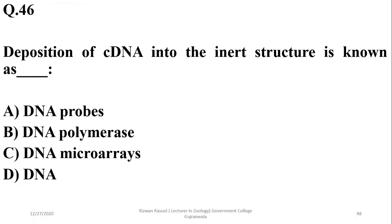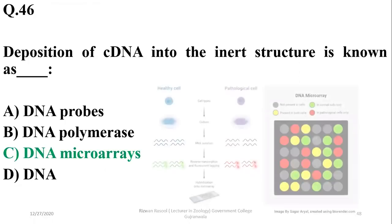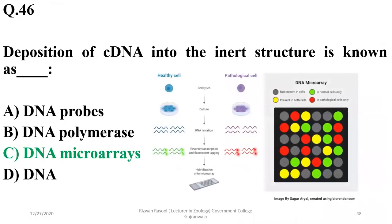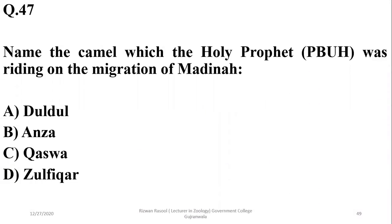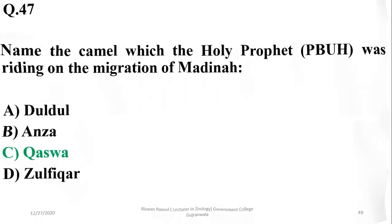Question 45: Deposition of cDNA into an inert structure is known as DNA microarrays. Charlie is the answer. Question 46: Name the camel which the Holy Prophet (PBUH) was riding during the migration to Medina. The answer is Kaswa.